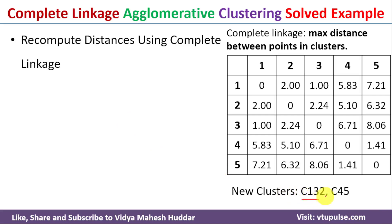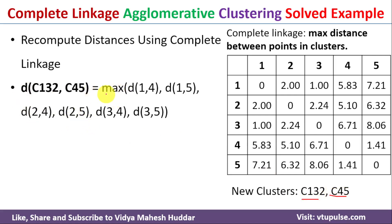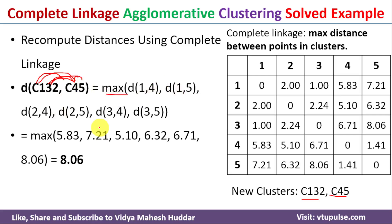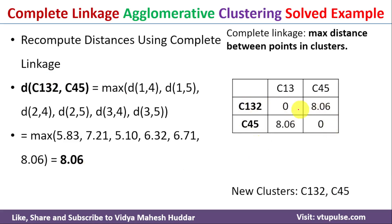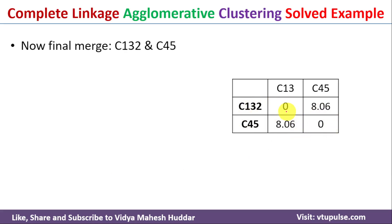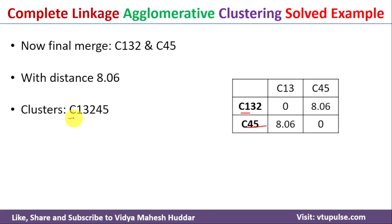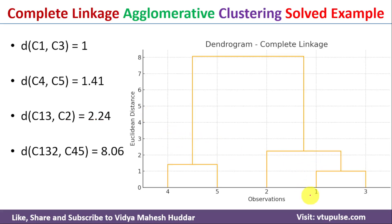The distance between C132 and C45 is the maximum of distances between data points 1 to 5, 1 to 4, 3 to 4, 3 to 5, 2 to 4, and 2 to 5. The maximum value among these is 8.06, so the distance between cluster C132 and C45 is 8.06. The final merge is between C132 and C45, giving us the final cluster C13245 with distance 8.06.